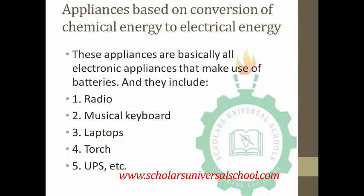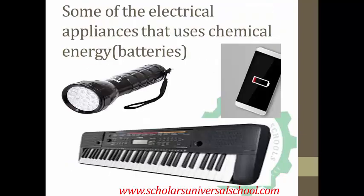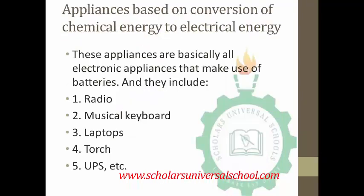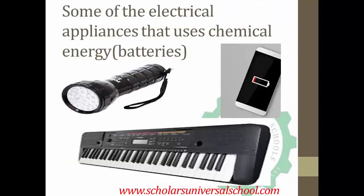The process of a battery producing electrical energy output is the process of conversion. The appliances include: radio — it makes use of a battery. Number 2, musical keyboard — it can either be played with an electrical source or with a battery. Number 3 is a laptop — a laptop uses a battery, so it converts chemical energy to electrical energy. Number 4, torch. And number 5, UPS, and so on.